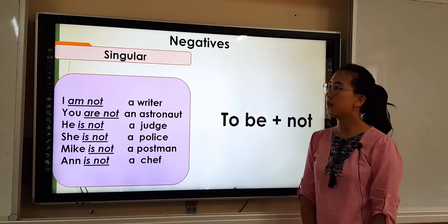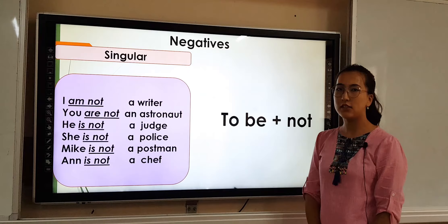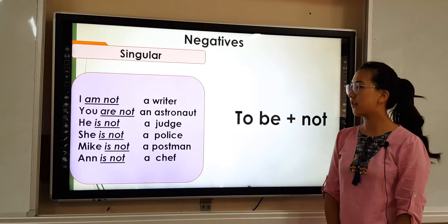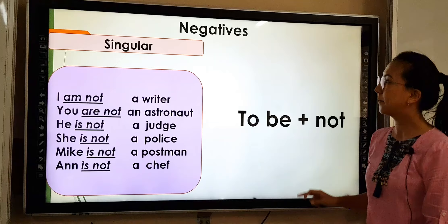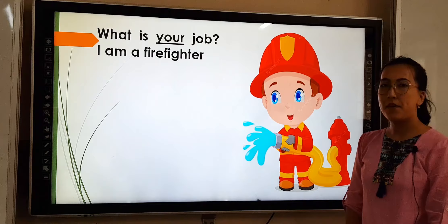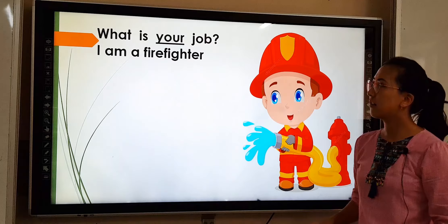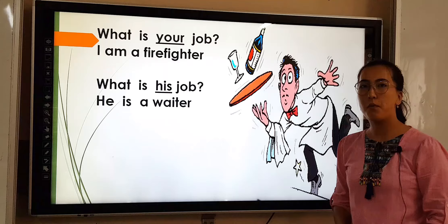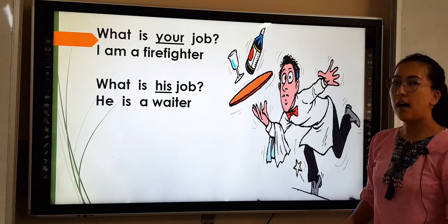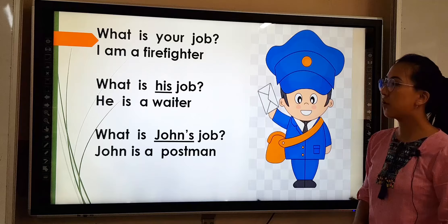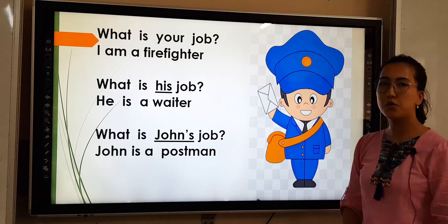You are not an astronaut. He is not a judge. She is not a police officer. Mike is not a postman. And if you want to know about the profession of another person, you ask: 'What is your job?' And they can answer: 'I am a firefighter.' Or you ask: 'What is his job?' And others may respond: 'He is a waiter.' You can also use the name of the person: 'What is John's job?' — 'John is a postman.'